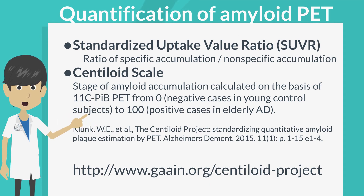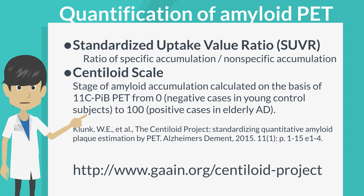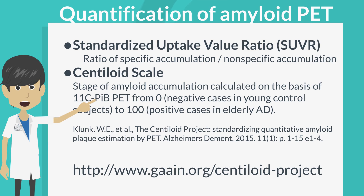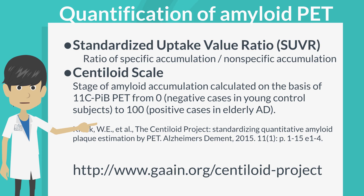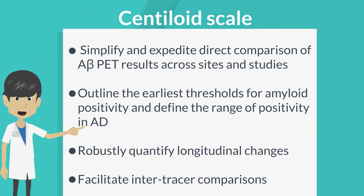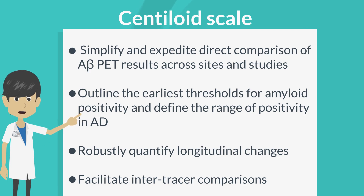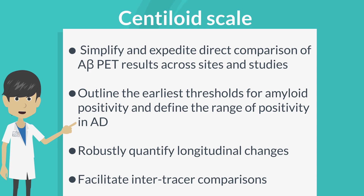Standardized uptake value ratio (SUVR), the ratio of specific over non-specific accumulation, has been conventionally used. On the other hand, the centiloid scale is a newer measure indicating stage of amyloid accumulation calculated on the basis of carbon-11 PIB PET, ranging from 0 in negative young controls to 100 in elderly Alzheimer's disease patients. The centiloid scale simplifies direct comparison across sites and studies, outlines earliest thresholds for amyloid positivity, robustly quantifies longitudinal changes, and facilitates inter-tracer comparisons.